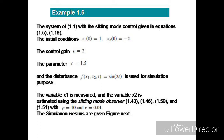Now we have Example 1.6. The system is given in equation 1.1 with sliding mode control from equations 1.5 and 1.19. The initial conditions are x1(0) = 1 and x2(0) = −2. The control gain rho is 2, the parameter c is 1.5, and the disturbance f is a function of state variables and time equal to 2*cos(3t).